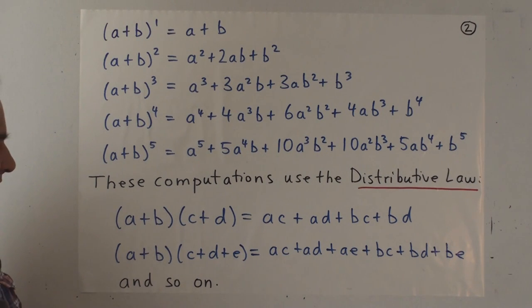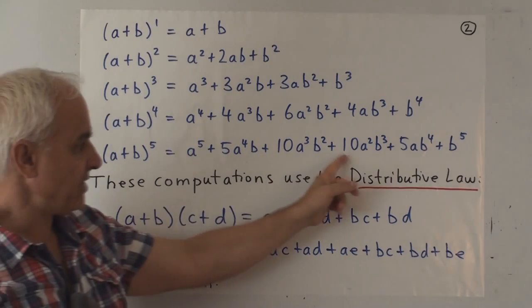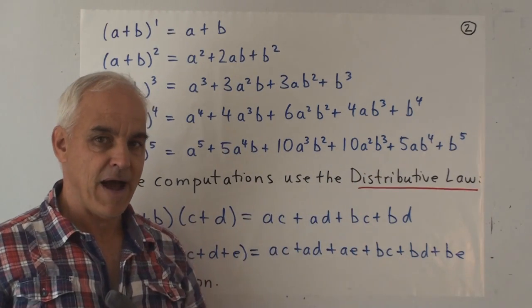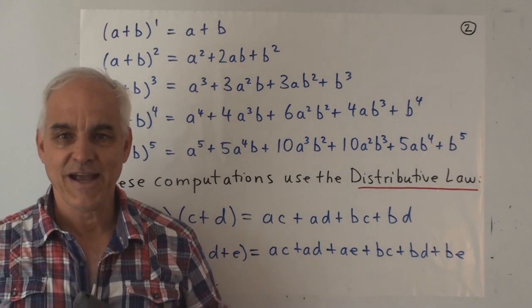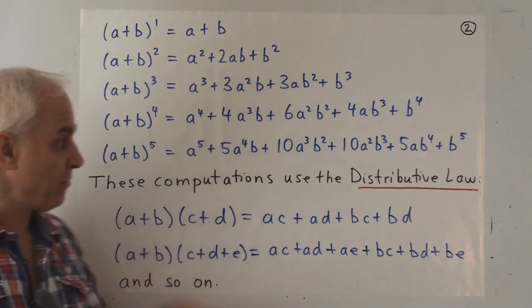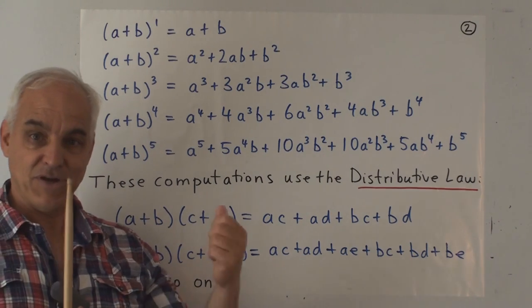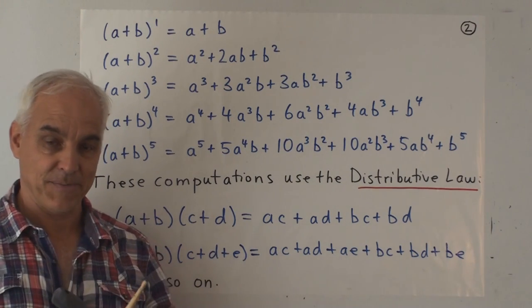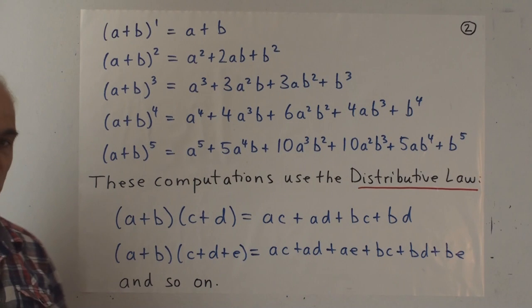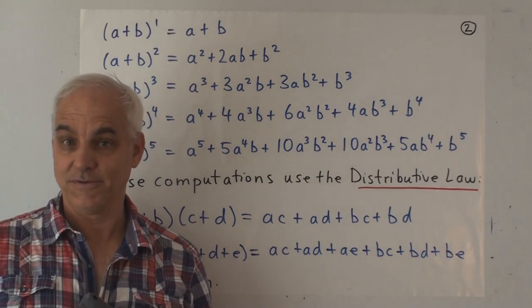And the most curious thing is these coefficients, 1, 5, 10, 10, 5, 1. How do we get those coefficients? How can we write them down compactly? How can we expand, for example, a plus b to the 10 without having to actually do the arithmetic? That's the essence of this binomial theorem problem that Omar Khayyam solved.